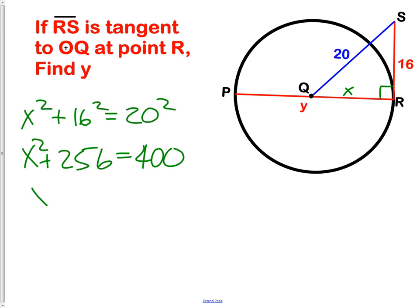Subtract the 256 across and X squared equals 144. Square root it and you get 12. That means the distance from Q to R is 12, which means Y is equal to 24. The diameter is always double the radius.